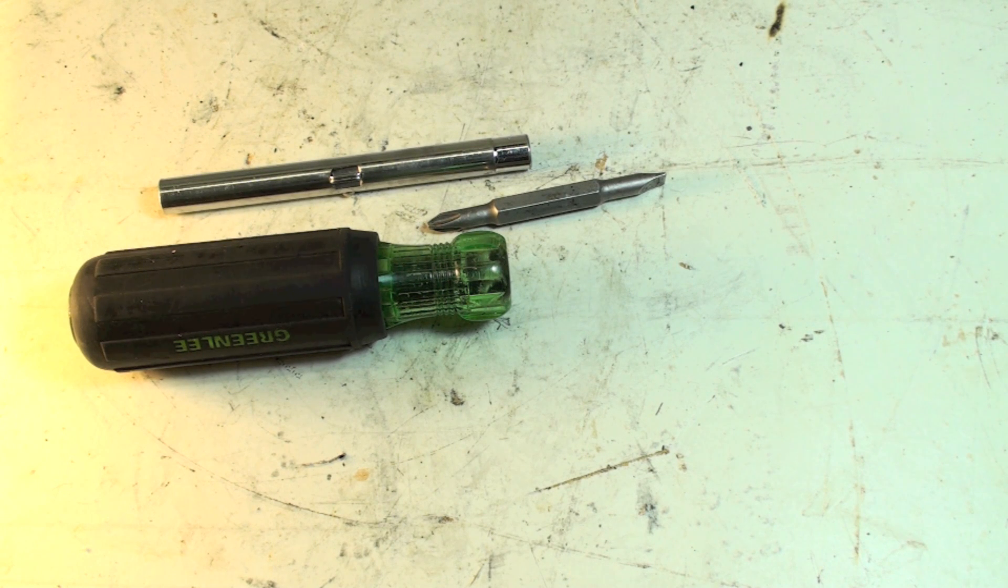Probably the best ones are Klein. Klein makes eleven in one. I think it's got a number one, number two square head drive one and two Phillips, quarter slot, and I think a three sixteenths slot.